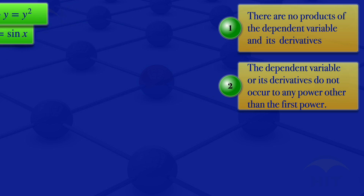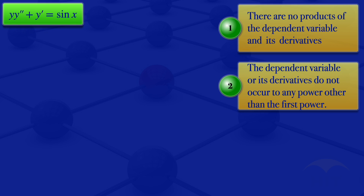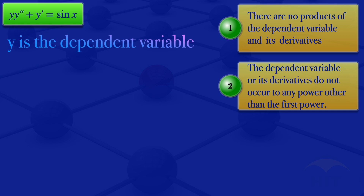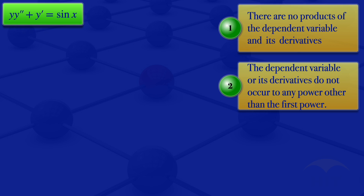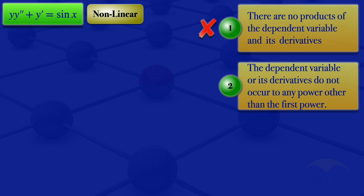Moving on to the second equation: y multiplied by y double-prime plus y prime equals sin(x). Here we can see that there is a product of the dependent variable and its derivatives — we are multiplying y by y double-prime, the dependent variable and its second derivative. Therefore it violates condition number 1, so we conclude that this differential equation is nonlinear. As long as one of the two conditions is violated, the differential equation is nonlinear.